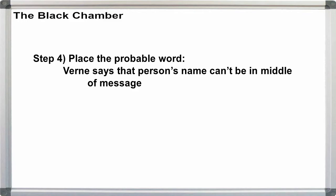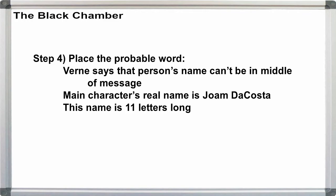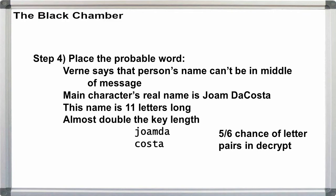For our probable word placement step, Verne says that if a proper name is going to be in the message, it has to be at the beginning of the paragraph like a salutation, or the end like a signature. Our hero's real name is Yoam da Costa, so let's try placing that first to see if Verne is correct. If we fail, we can try Diamantz or Rio de Janeiro. First, note that Yoam da Costa is 11 letters long, almost double the length of our period. If we write it out in lines of period length, the letters are mostly paired up. We have a 5 out of 6 chance that we've already deciphered one of the pairs of letters.